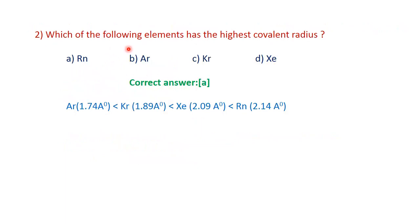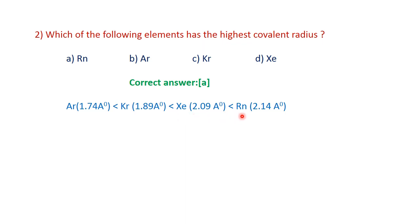Question 2: Which of the following elements has the highest covalent radius? In the noble gas group, it consists of Argon, Krypton, Xenon, and Radon. The covalent radius of Argon is 1.74 Angstrom units, Krypton is 1.89 Angstrom units, Xenon is 2.09 Angstrom units, and Radon is 2.14 Angstrom units — increasing in that order. Rn has the highest covalent radius.